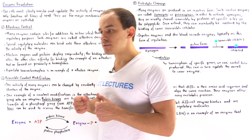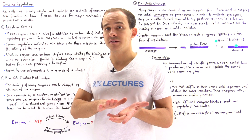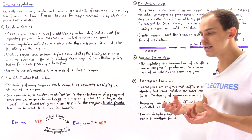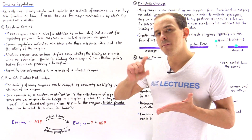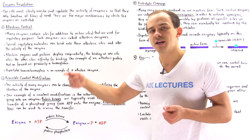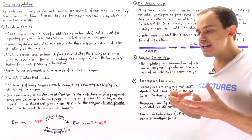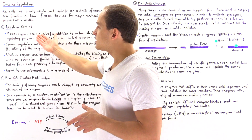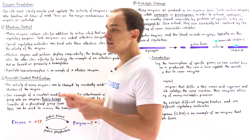Allosteric enzymes and allosteric proteins exhibit something called cooperativity, which we discussed in detail when we covered hemoglobin. The binding of a molecule onto one site on the enzyme or protein affects the affinity of the other sites for that same molecule. The enzyme we'll focus on in the next several lectures that is controlled allosterically is aspartate transcarbamylase, and we'll see exactly how this is done.